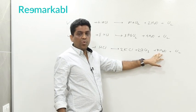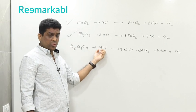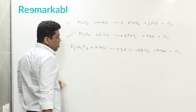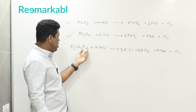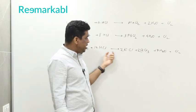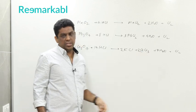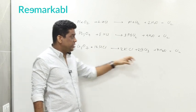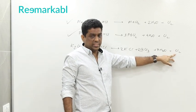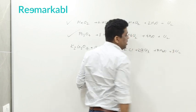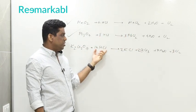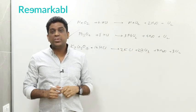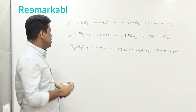How many hydrogens now? Fourteen — so I write 14 HCl. Now calculate chlorine: on the right, 2 plus 6 is 8 chlorine atoms from KCl and CrCl₃. I need 14 total, so I need 6 more — that means 3 Cl₂ molecules. Total chlorine: 2 plus 6 is 8, plus 6 is 14. The equation is now balanced.